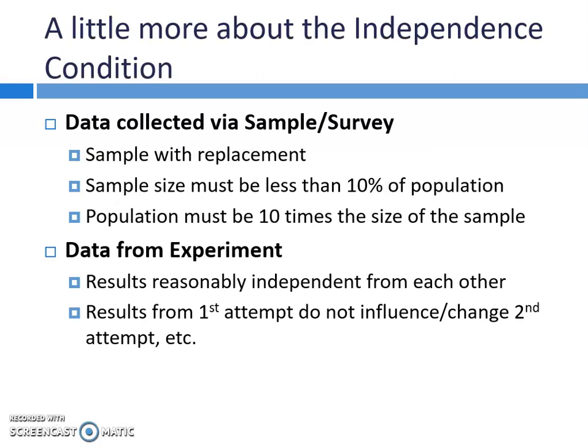Of those four conditions, I want to talk a little bit more about the independence condition. Depending on how you collect your data, that's going to make it look a little different. If your data is collected through a sample or a survey, we are probably sampling without replacement, so your sample size must be less than 10% of the population — meaning your population has to be 10 times the size of the sample. If we have a sample that is larger than 10% of the population, it just means we can't use a binomial distribution. We would need to use something else that we don't learn about in AP.